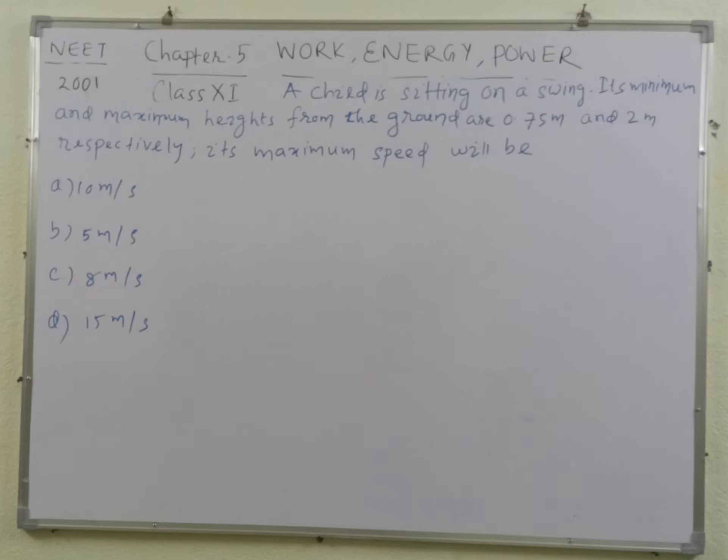Students, this question was asked in the year 2001 NEET exam from chapter 5 of class 11, that is from the chapter of work, energy, and power. A child is sitting in a swing. Its maximum and minimum heights from the ground are 0.75 meter and 2 meter respectively. Its maximum speed will be how much?